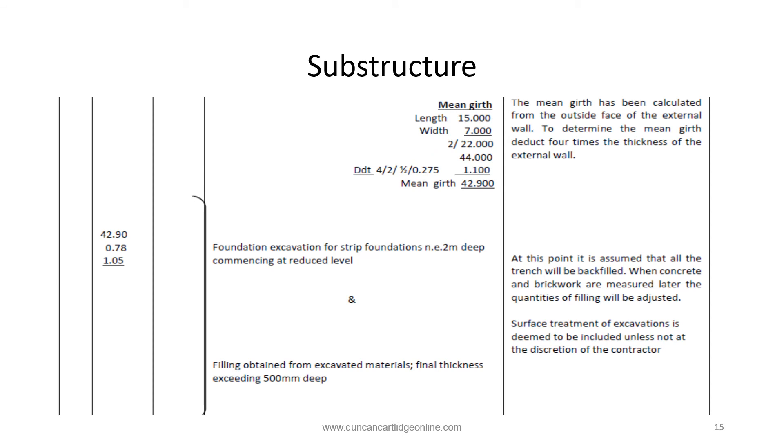The next item on the taking off list is the foundation excavation and for this we will need to calculate the mean girth or centerline of the trench. Once calculated we will be able to use it for a number of items. To calculate the mean girth from the external dimensions add the length and width together and multiply by 2 and then deduct 4 times, twice times, half times the thickness of the wall in this case 275 millimeters to give us 42.9.